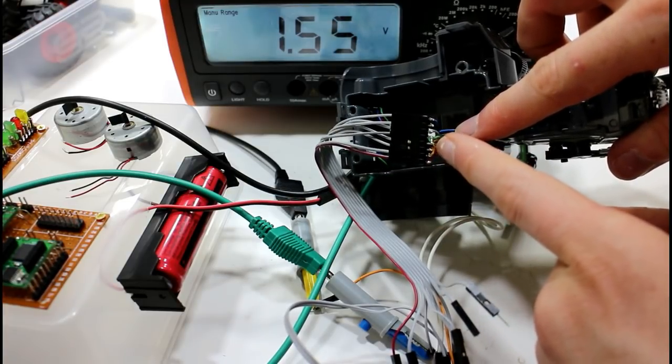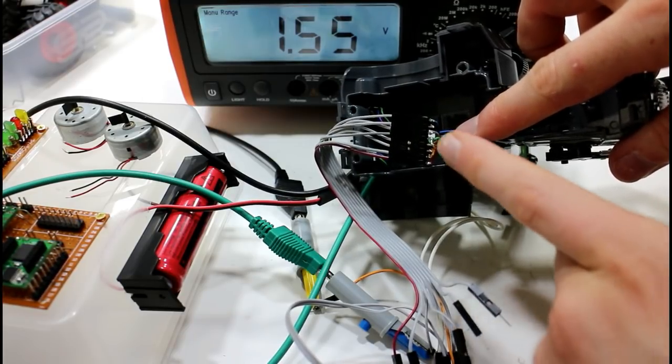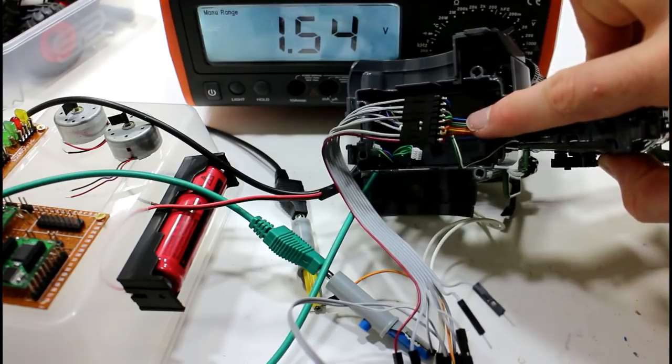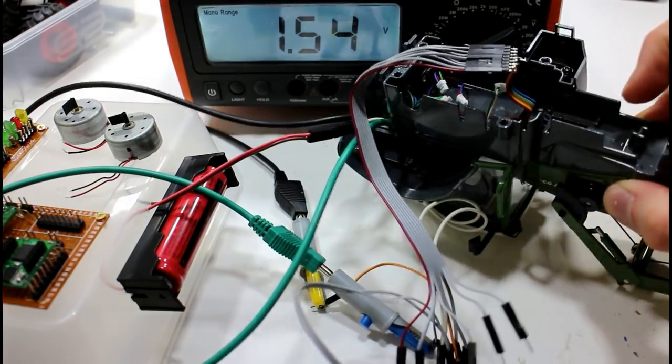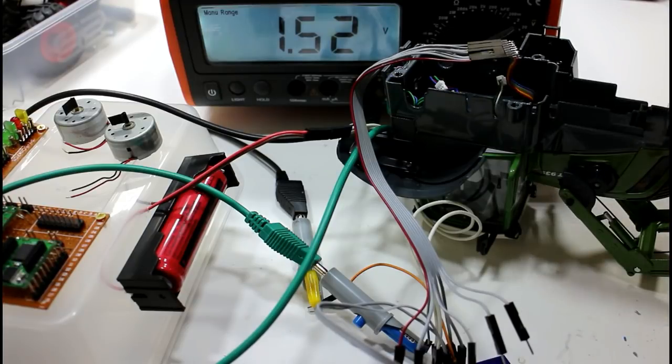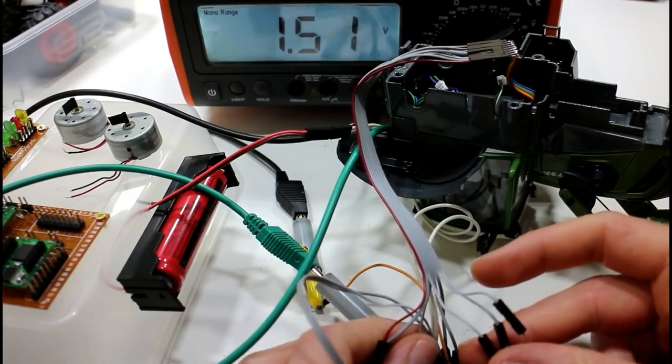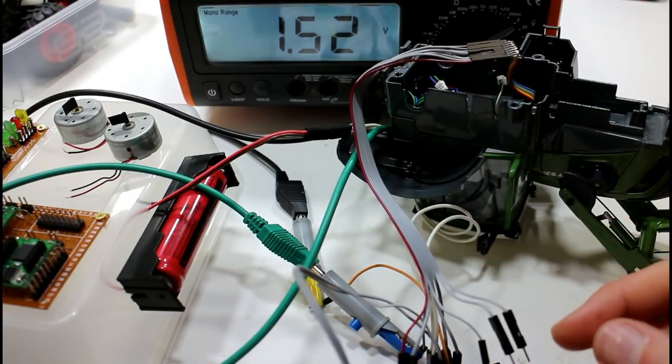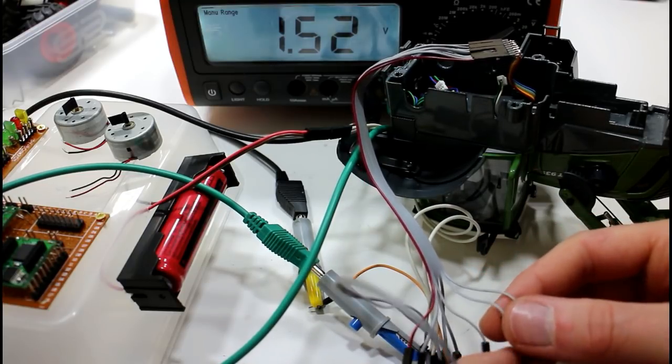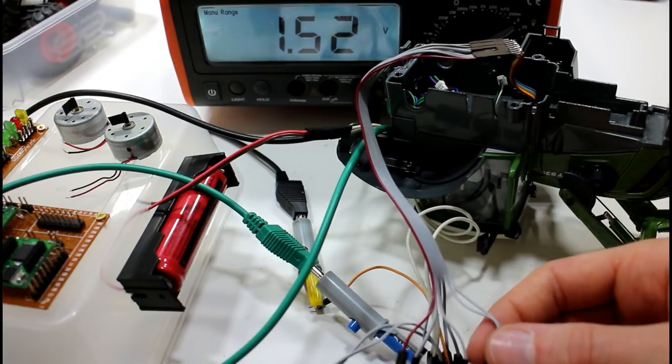The brown wire is the signal for your loader, and the orange is the signal for the bucket. That's your feedback from your loader and your bucket. Now I have it hooked up to the voltmeter here. I am connected to the brown wire, which is the loader, so if I make changes to the blue and the black wires, we should see that signal change.